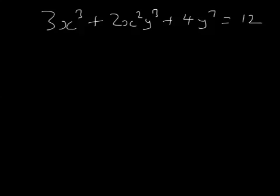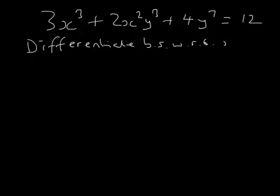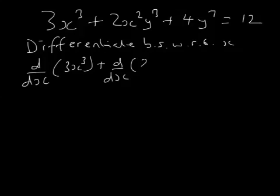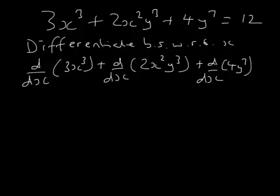What about 3x cubed plus 2x squared y cubed plus 4y to the power 7 equals 12? What's dy by dx here? Well, let's differentiate both sides with respect to x.